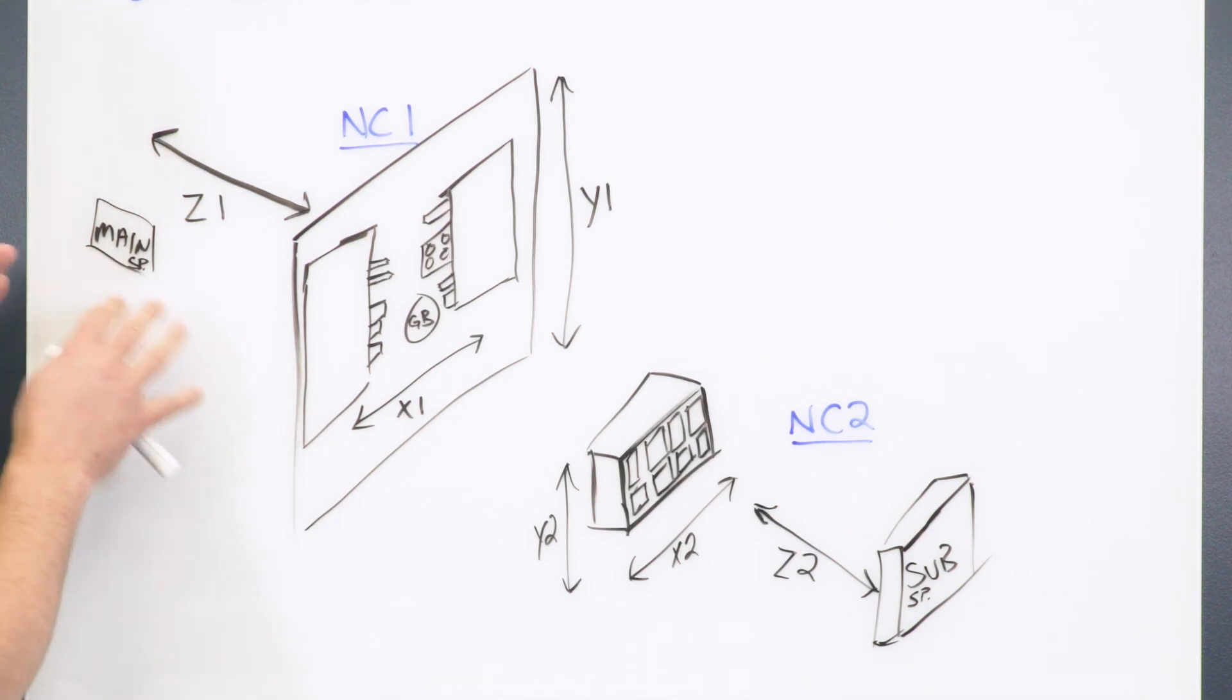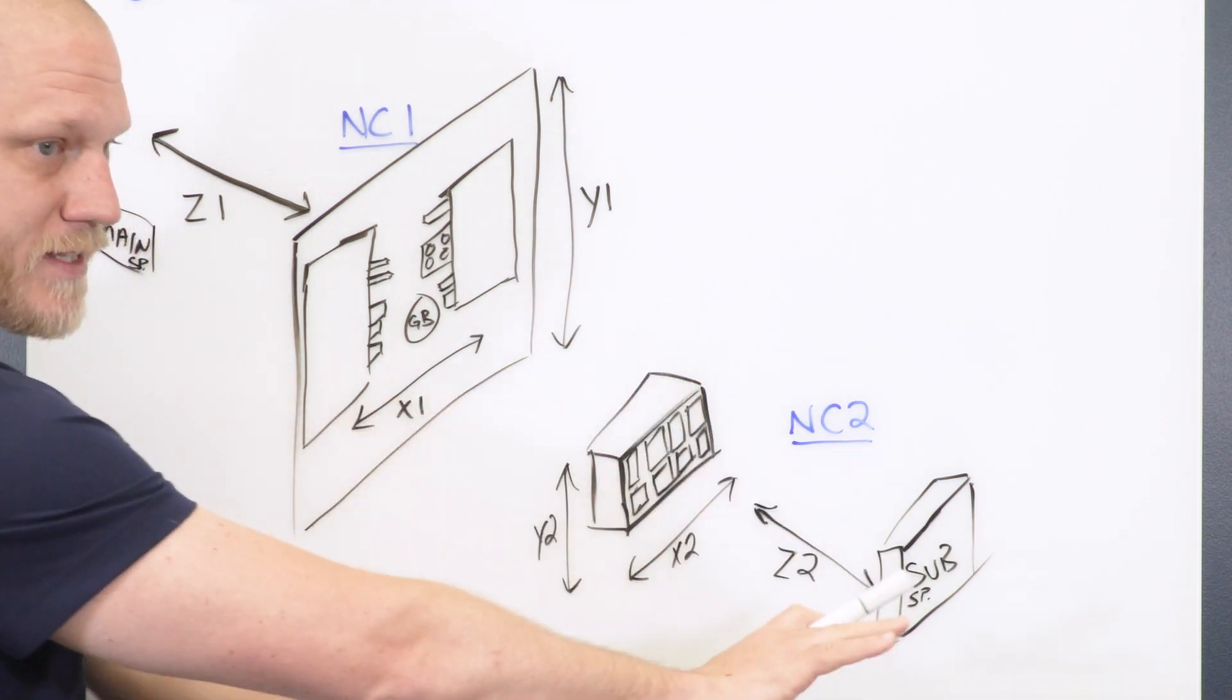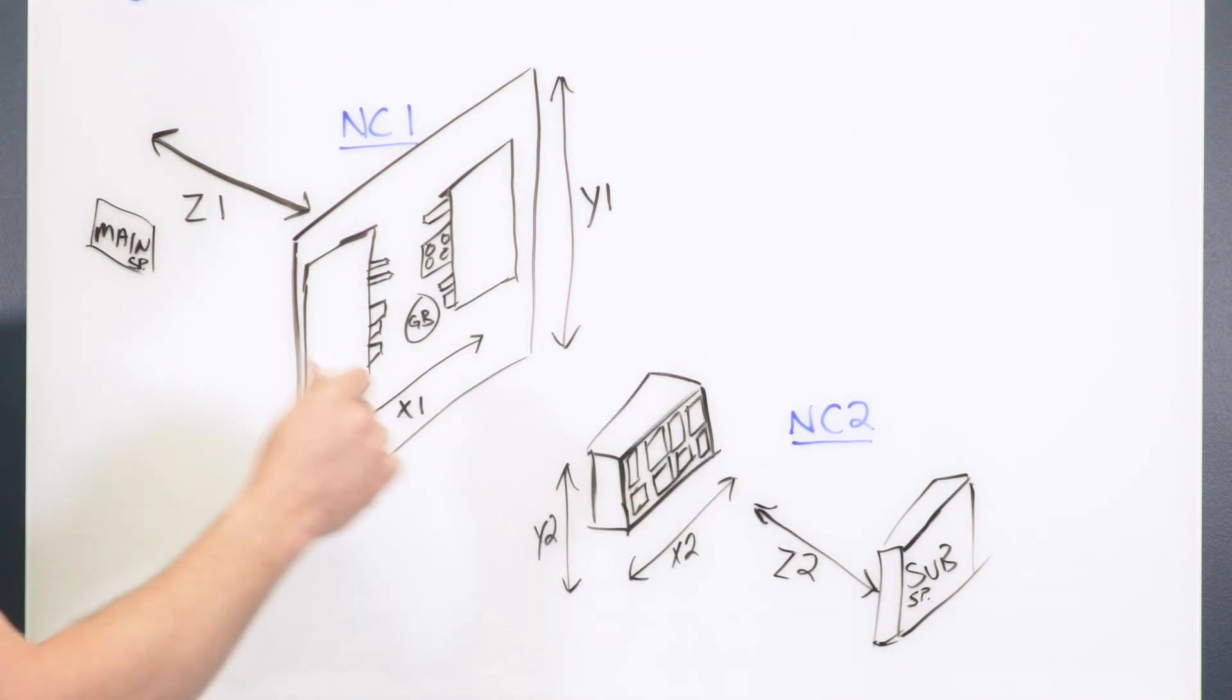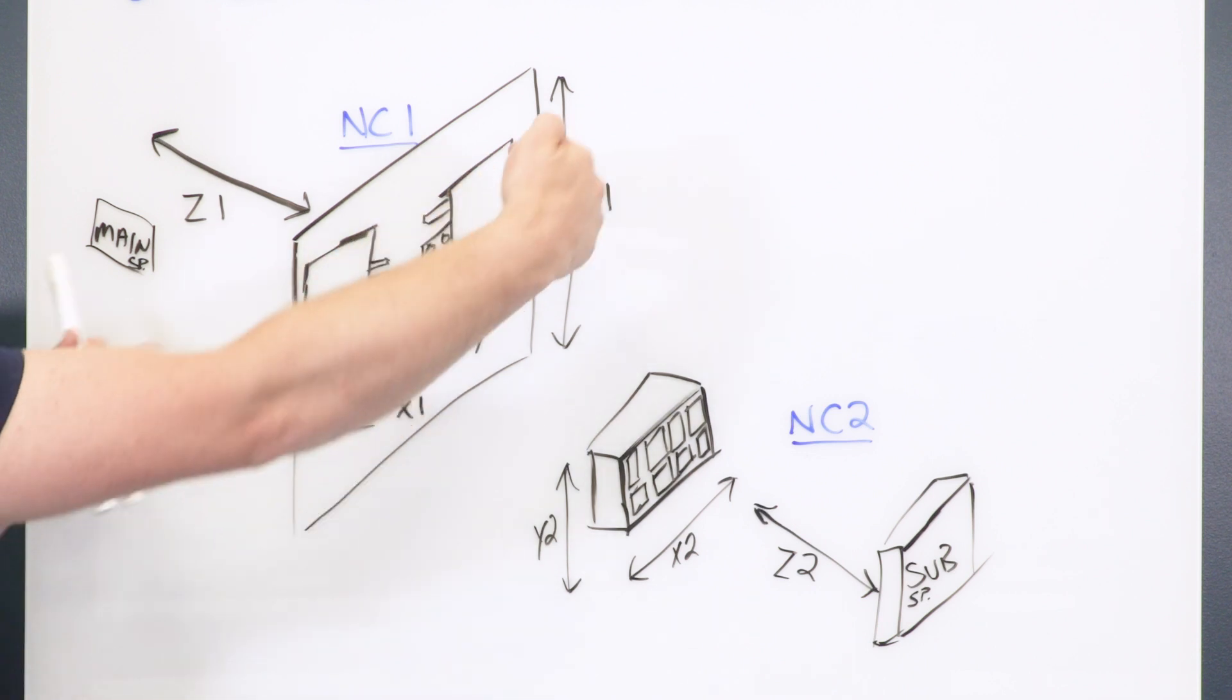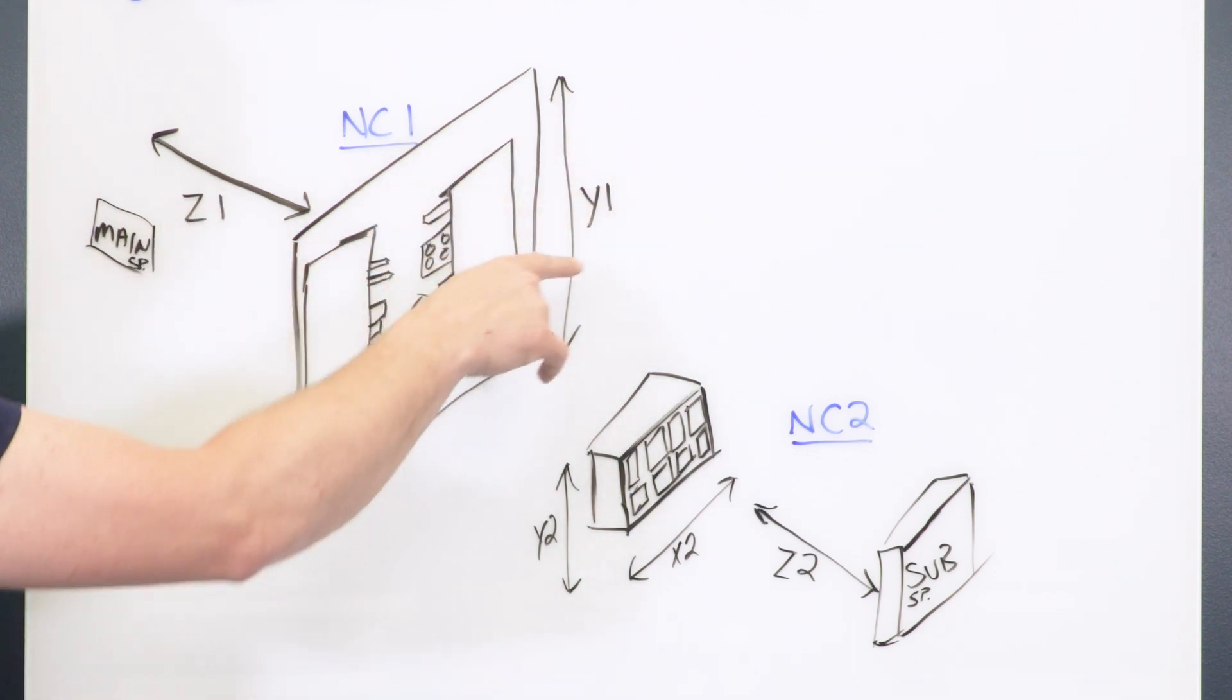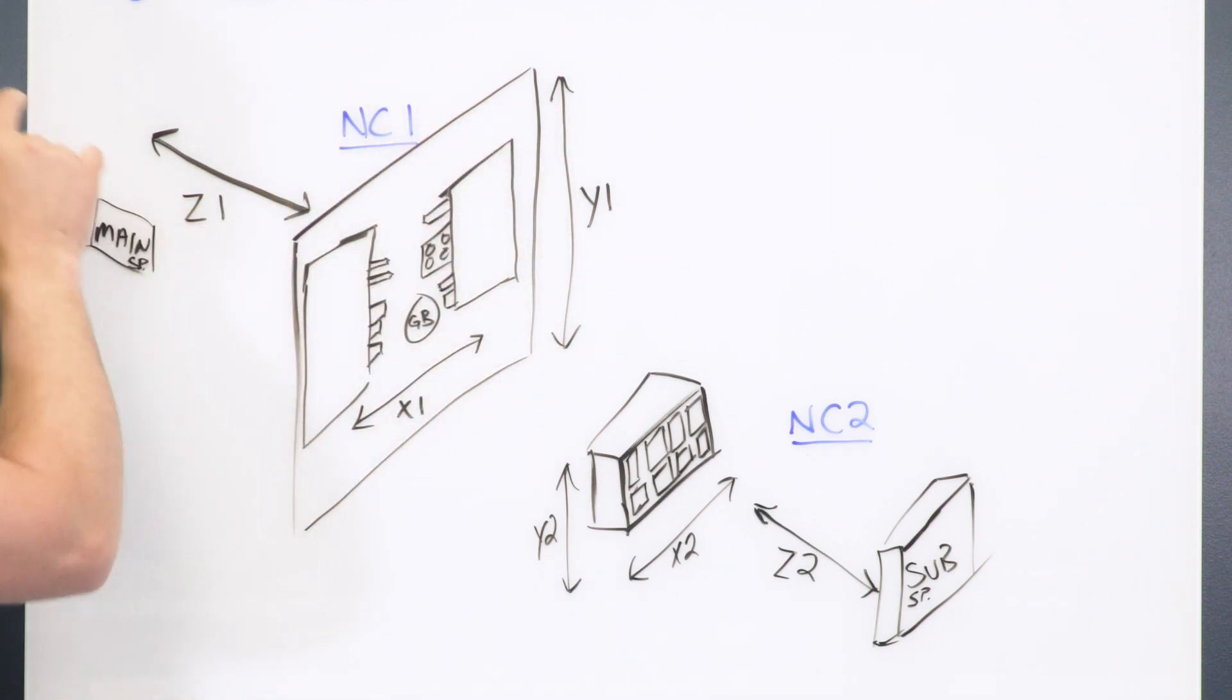Your main spindle is always going to be NC1 and your sub spindle is always going to be NC2. The main spindle side is going to have the standard Cartesian coordinate X, Y, and Z1. So you have X1, which is going to be your diameters. Your tooling is going to face the spindles. So this would be X1. Y1 is going to be vertical. And Z1 is going to be your main spindle movement. So that's going to be your sliding headstock moving back and forth.